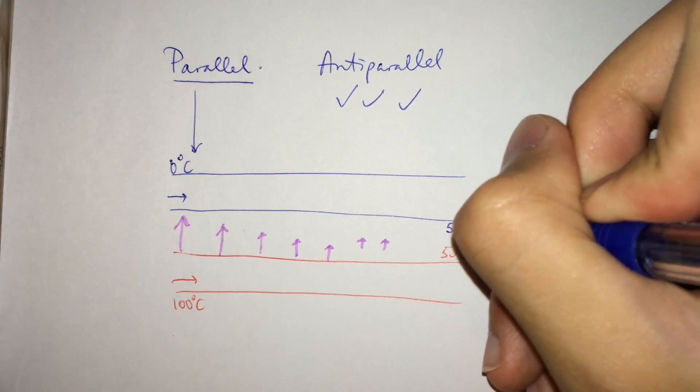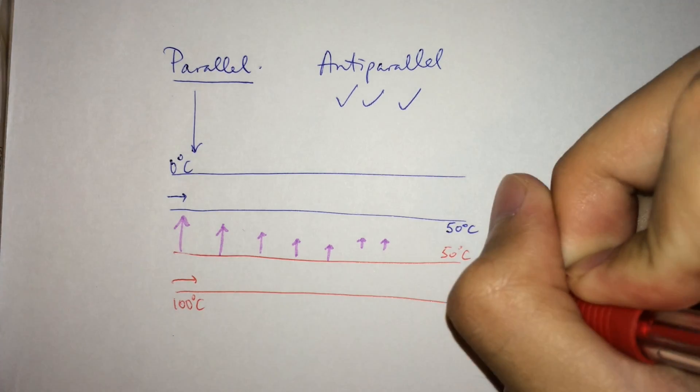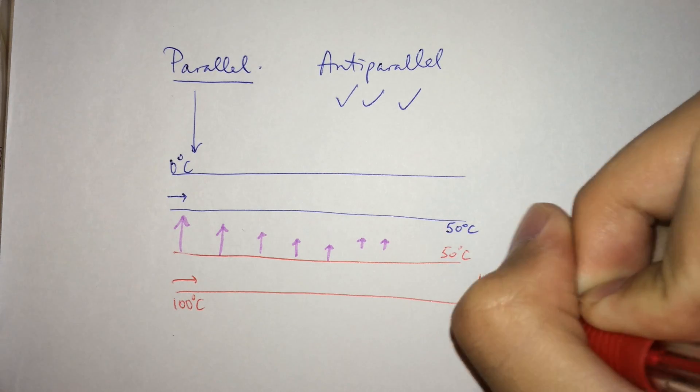For example, if two liquids are the same kind and same volume, 100 degrees water and 0 degrees water would finalize at 50 degrees in both liquids, so you got a half transfer of heat.